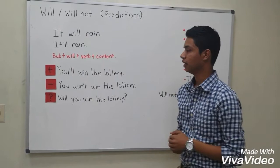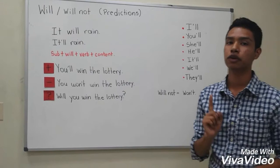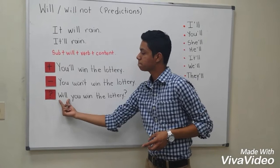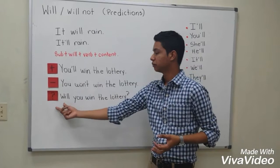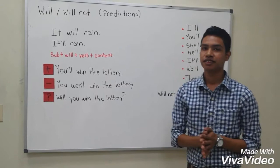And what happens if you want to make a question? If you want to make a question, you have to be careful because you have to put first the auxiliary verb — in this case, will — then the subject pronoun, and then the main verb in its base form, and then the complement. For example: will you win the lottery?